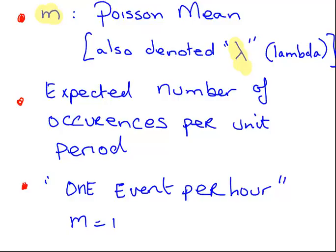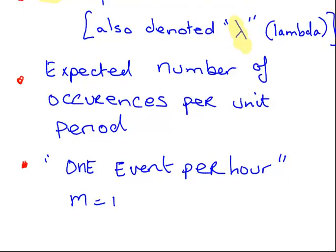It doesn't necessarily mean that exactly one is going to happen. Two could happen and then zero in the next hour. But if we're expecting one event per hour on average, we would say M is equal to 1. Quite important is this notion of unit period — if you change the unit period, you have to change M accordingly and stay consistent with whatever period you're working in.